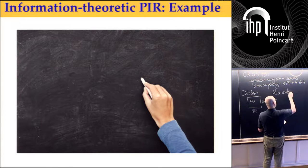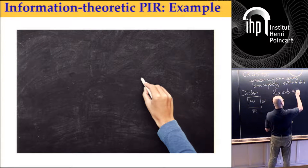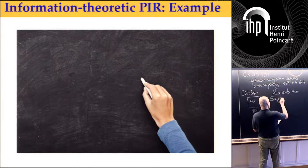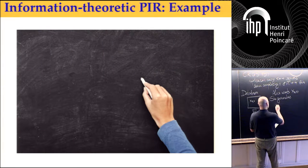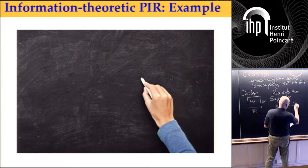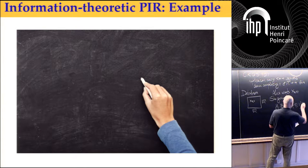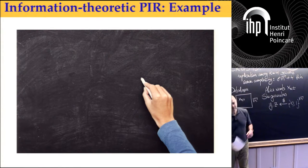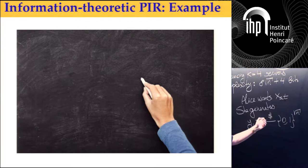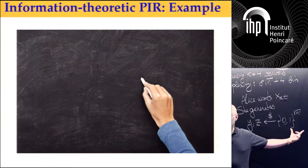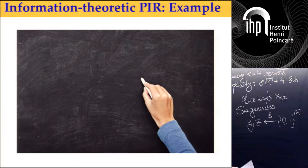Alice, the user, wants x sub s, sub t, and she generates two binary vectors y and z of length square root of n, sampled uniformly at random.